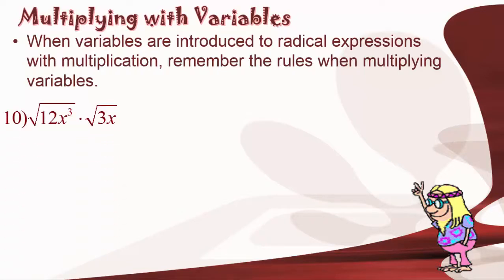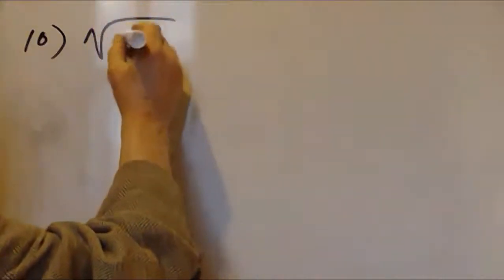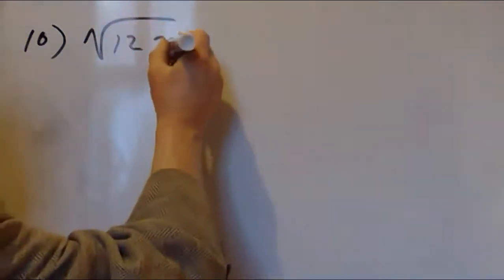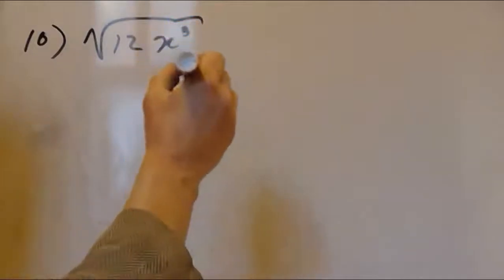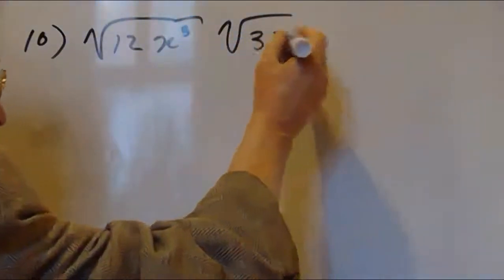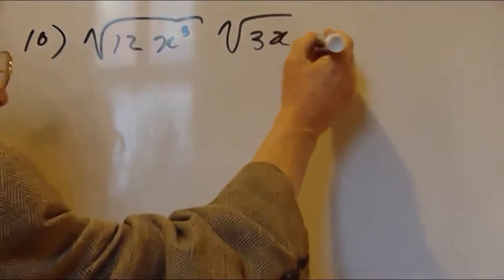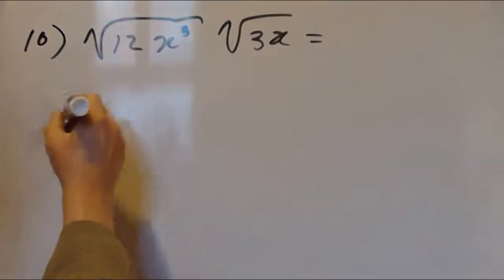In example number 10, we're asked to multiply square root of 12x cubed times square root of 3x. Up to now we've been doing multiplication of radicals with just regular numbers, but the same is true for variables. So for example, if we have the square root of 12x cubed times square root of 3x, we can just put them all together and see if we can simplify things.